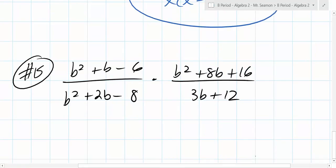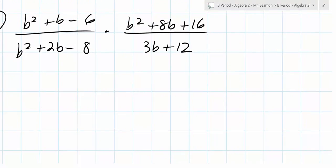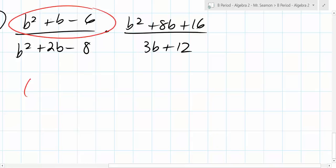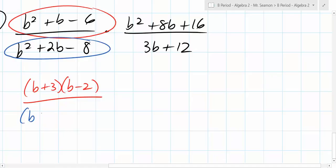So can someone raise their hand and tell me what the factor form of the top is, the numerator? Lauren, can you tell me what it is? Kelly, you can start us off. B plus 3 times B minus 2. Good job. Can someone tell me what the factor form of the denominator on this one is? Rachel. B plus 4 times B plus 2. And it's got to multiply together to get 8.